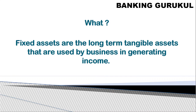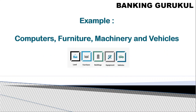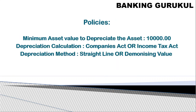These assets are used for generating income. For example, in a manufacturing industry, you need machinery — that's a fixed asset. Using that machinery you'll produce some product that will be sold in the market, generating income. So if you are running a business and using computers, furniture, machinery, and vehicles, then all these are called fixed assets.